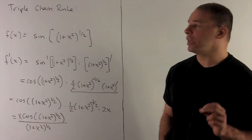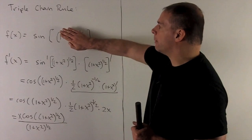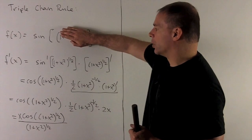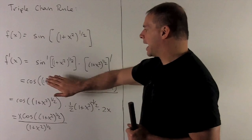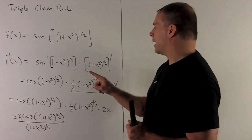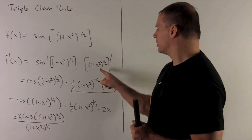If you want to do it quick, all you need to do is cover this up. What's the derivative of sine? That's cosine. Put the inside back in. And then, I just multiply it by the derivative of this thing. So, that's right there.